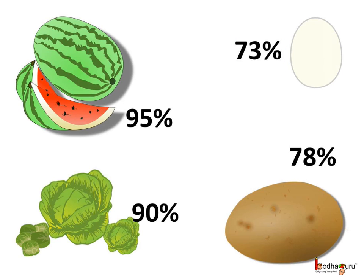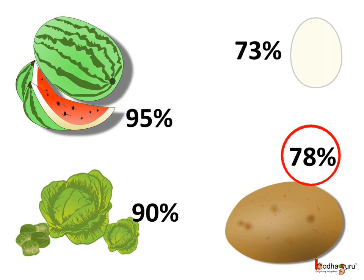Green vegetables have around 90% water, and the potato has 78% water. So we see water is an important component of all types of foods.